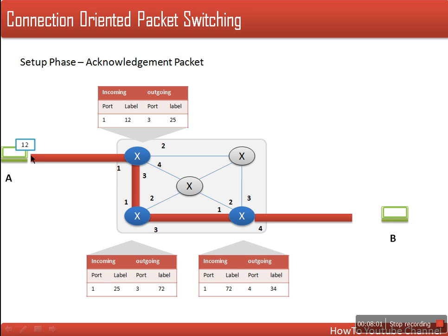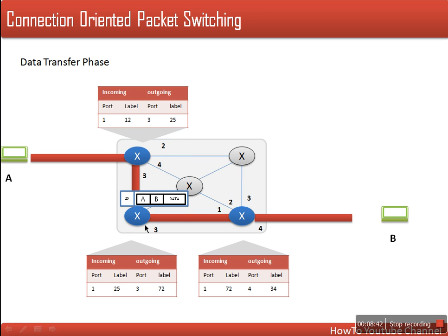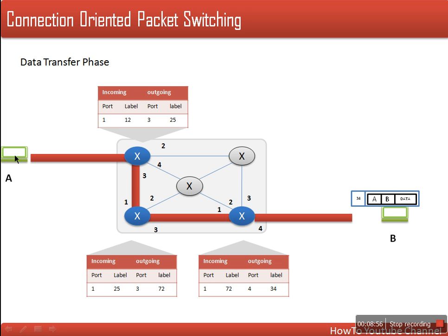So now the sender would know: if I need to send any data packets to node B, I will put label 12 on those data packets. So let's say this is the first packet — this packet will be having label 12, along with sender, receiver, destination address, and data. This will be sent to the router. The router will look in its routing table: if a packet is coming from port 1 with label 12, it has to be forwarded to port 3 with a new label. So this packet's label has to be changed — this router will change the label from 12 to 25, then the next router will change it to 72, and the next will change it to 34 and forward it. Every packet sent by this node will be carrying label 12, and this router will send them all on the same path.